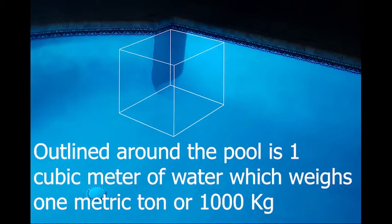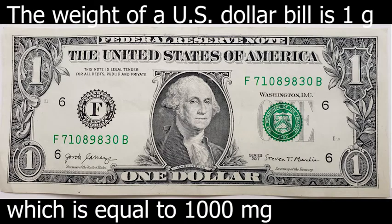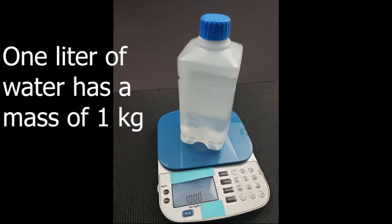Outlined around the pool is 1 cubic meter of water, which weighs 1 metric ton or a thousand kilograms. Mass or weight: 1 cc or 1 milliliter of water weighs 1 gram. The weight of a US dollar bill is 1 gram, which is equal to 1000 milligrams.